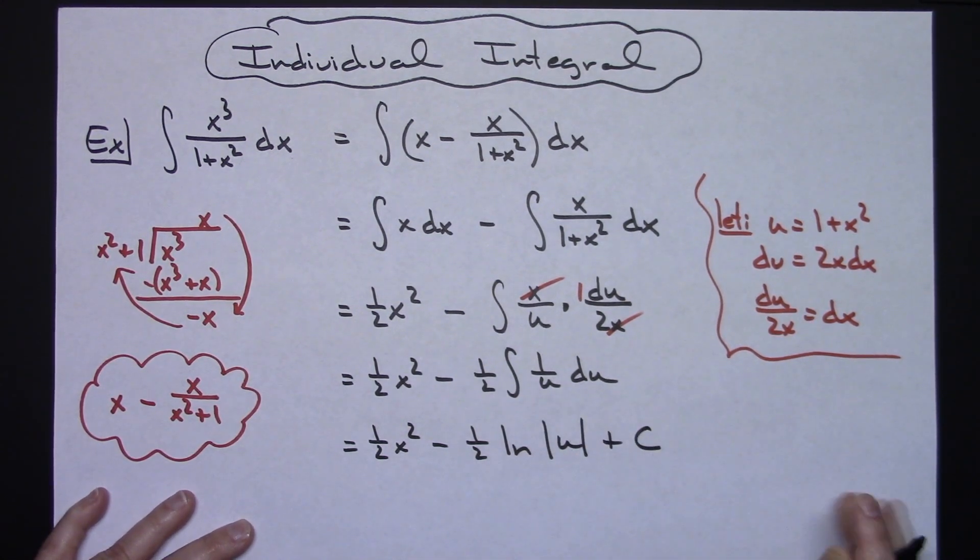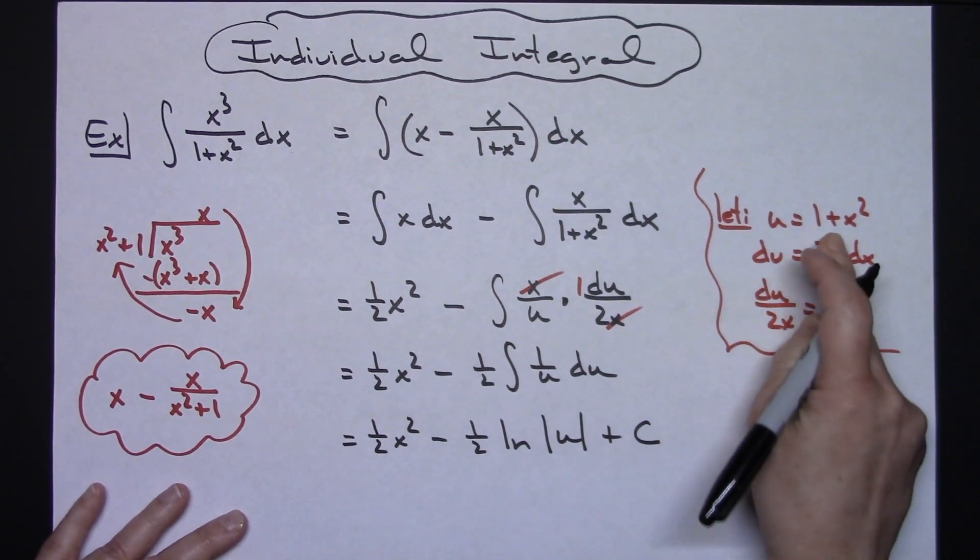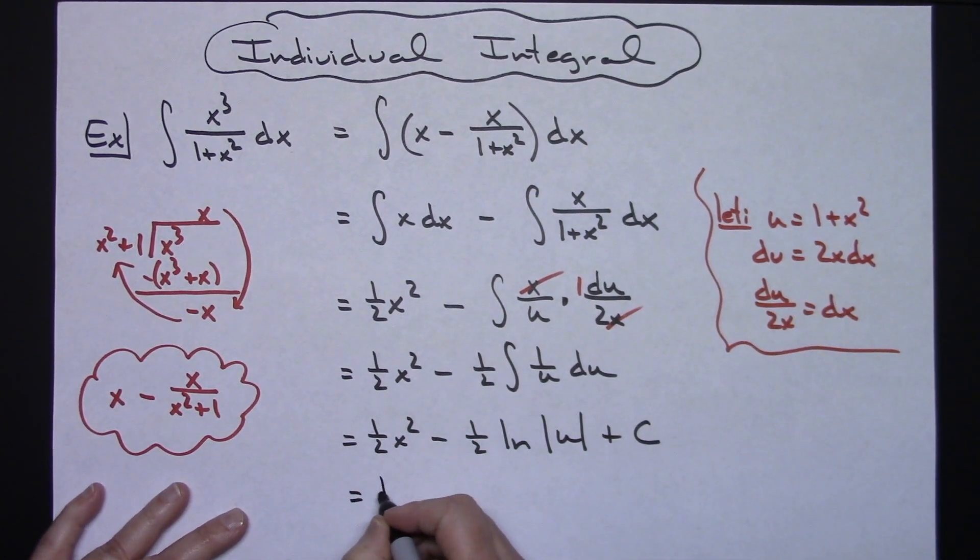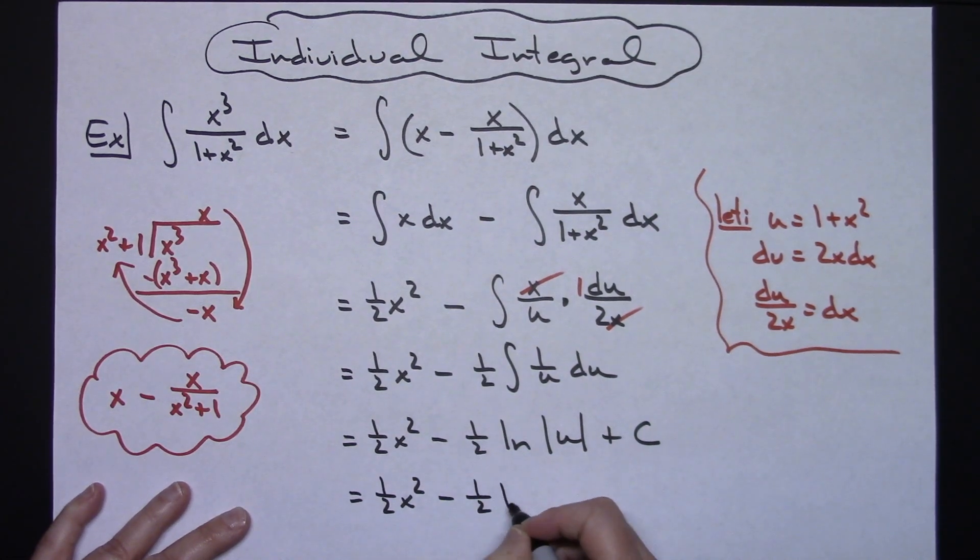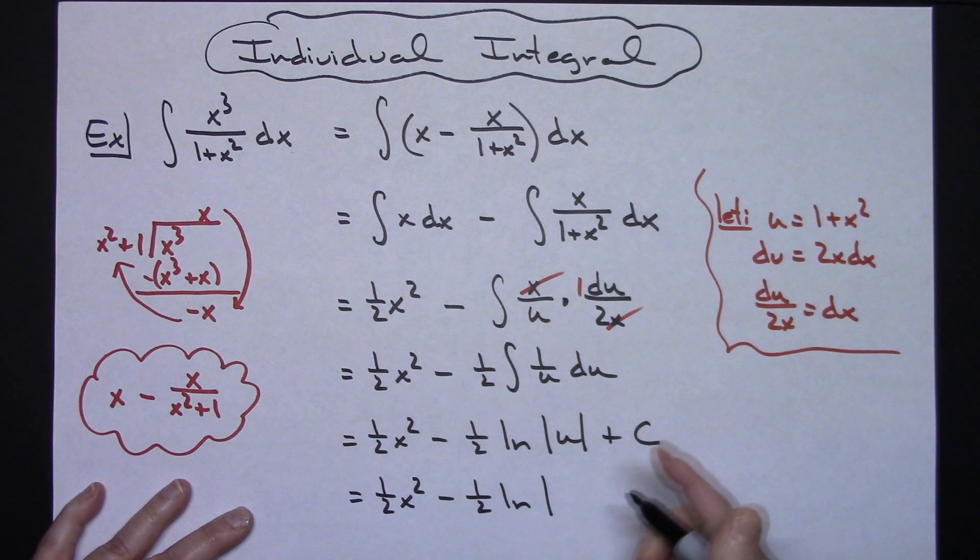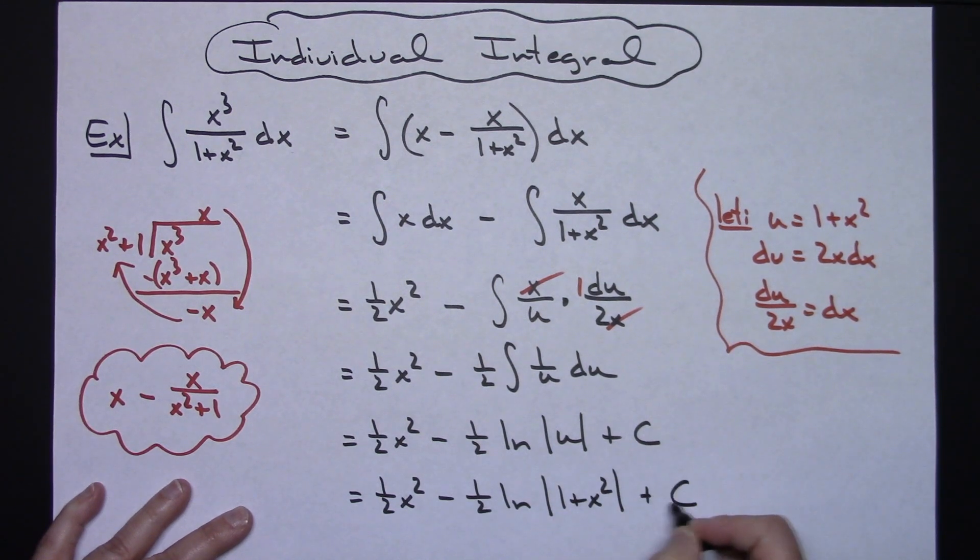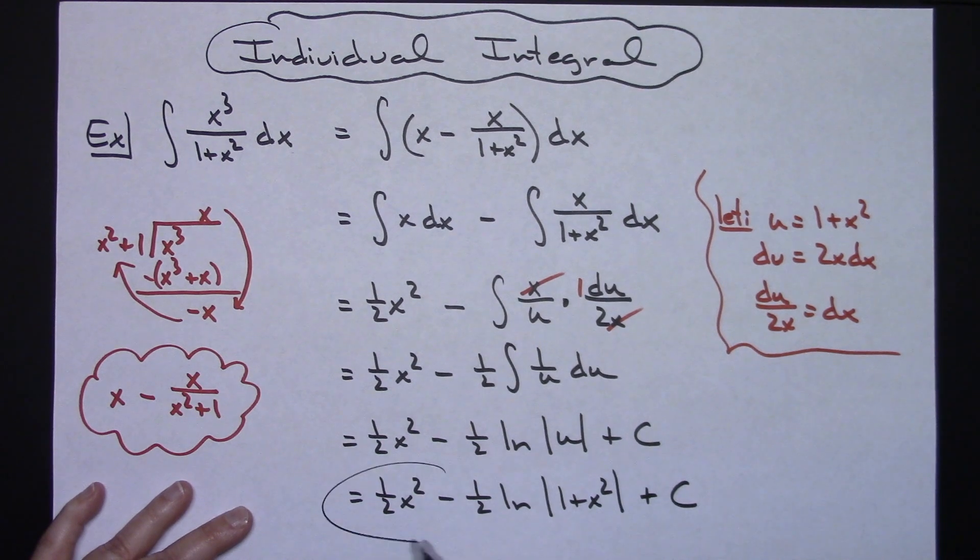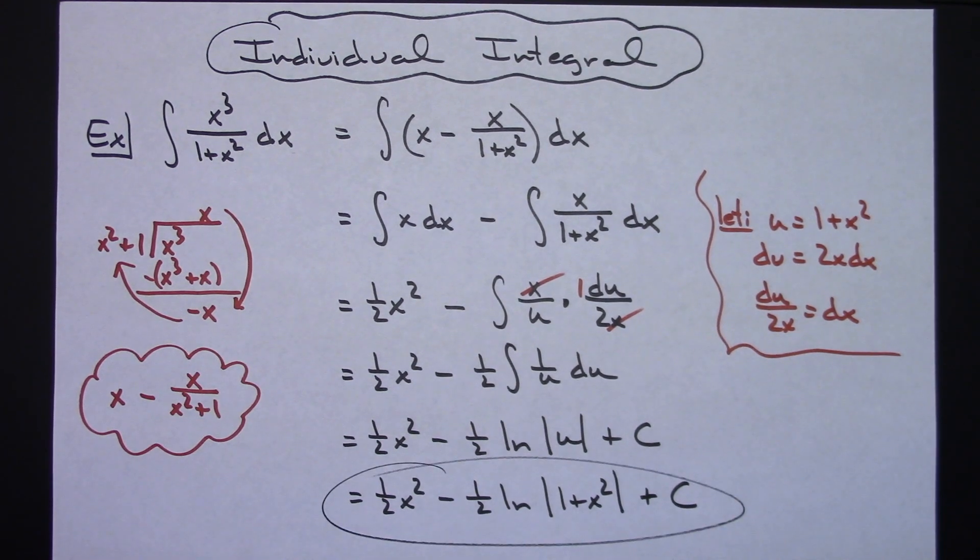And then all that's left is putting the value of u back in there. So we'll have a 1 half x squared minus a 1 half natural log absolute value 1 plus x squared plus c. So definitely a straightforward integral after that initial step.